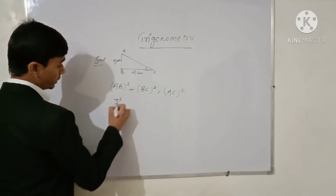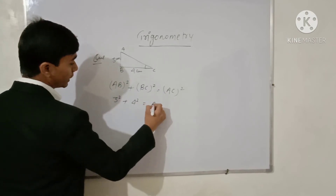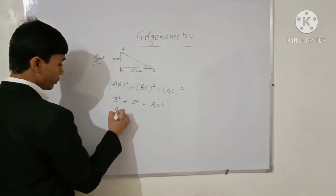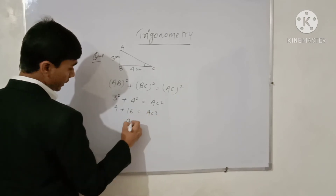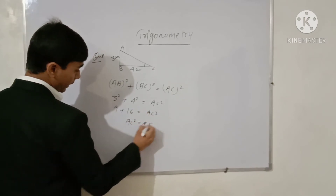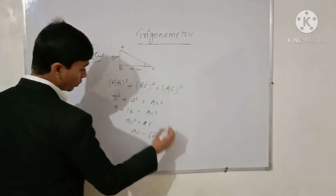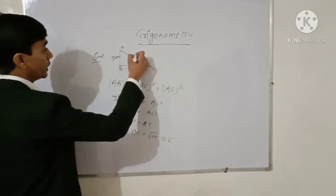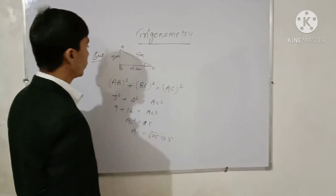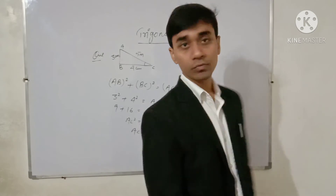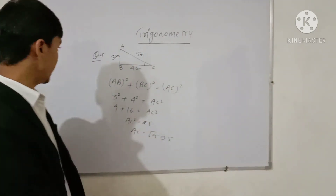Using Pythagoras theorem: AB squared is 3 squared which is 9, and BC squared is 4 squared which is 16. So AC squared equals 9 plus 16, which is 25. Therefore AC equals the square root of 25, which is 5. So we have calculated side AC as 5 cm.